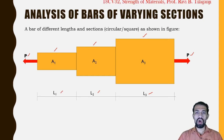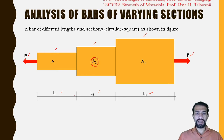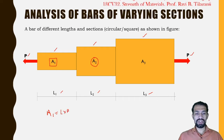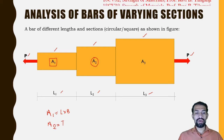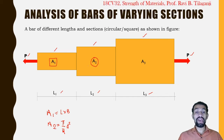These section bars may be of circular section, square section, or any other section — the area will change accordingly. For a square bar, Area 1 (A1) equals length times breadth. For a circular bar, Area 2 (A2) equals π/4 times d², where d is the diameter. If diameter is not known, we use the radius, since diameter equals two times the radius.